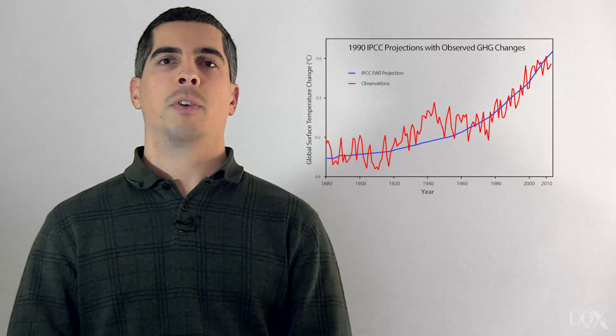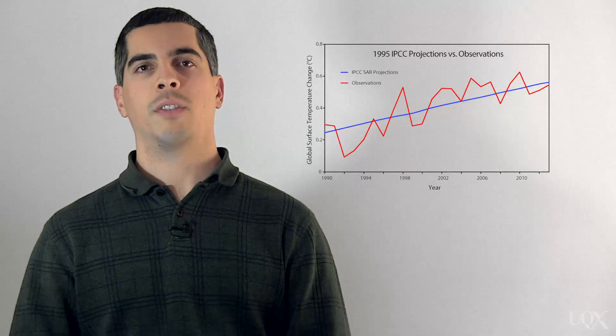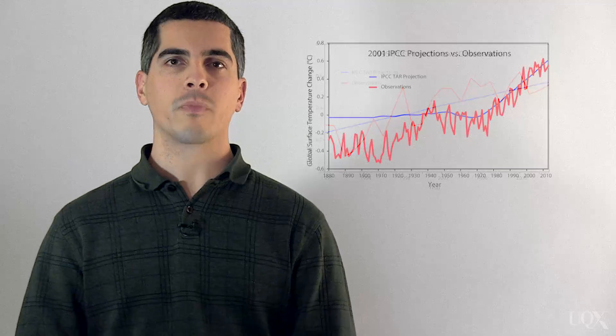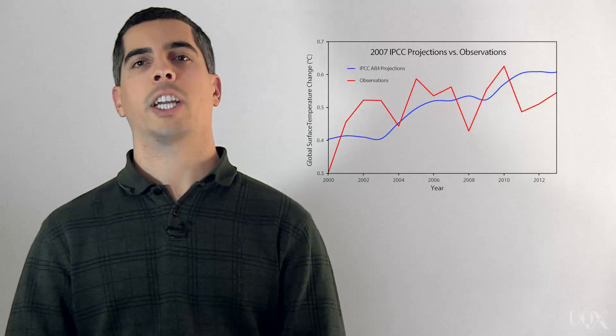The Intergovernmental Panel on Climate Change has also used simulations from the most advanced climate models available to project global temperature changes in each of its reports. Those reports were published in 1990, 1995, 2001, 2007, and 2014. In each one, the global warming projections made by the climate models have turned out to be remarkably accurate.